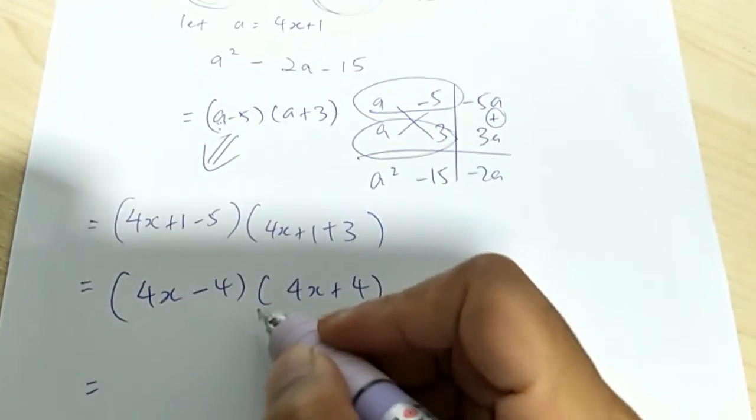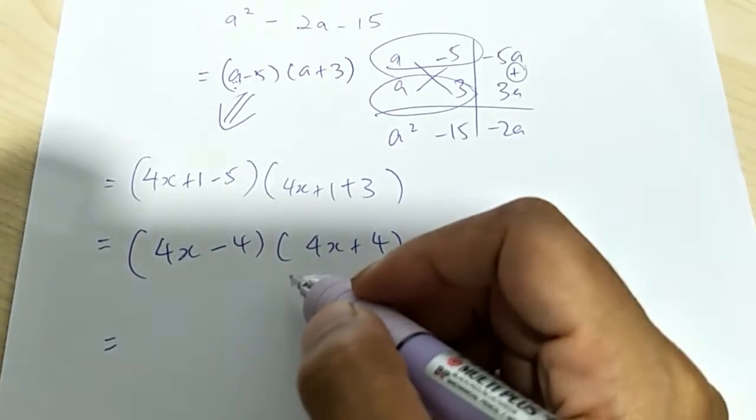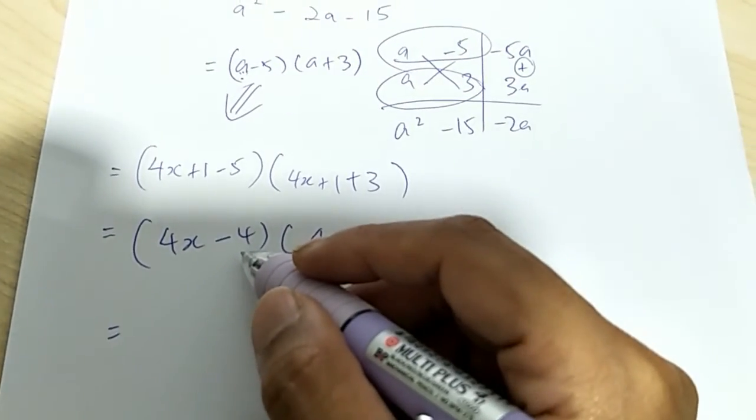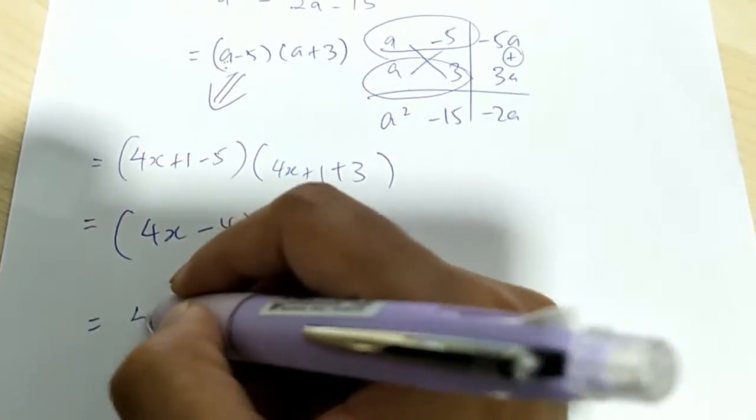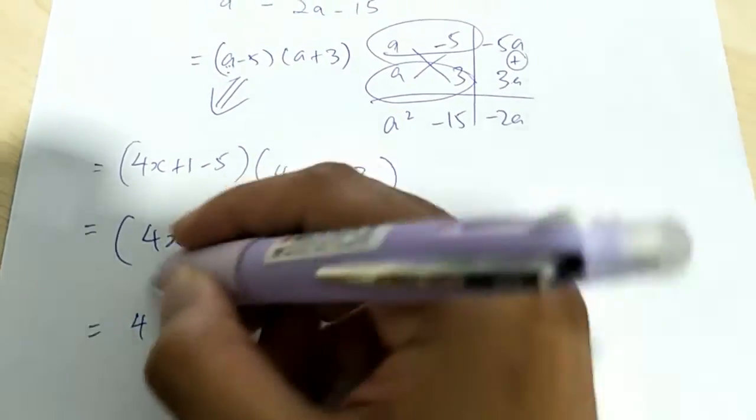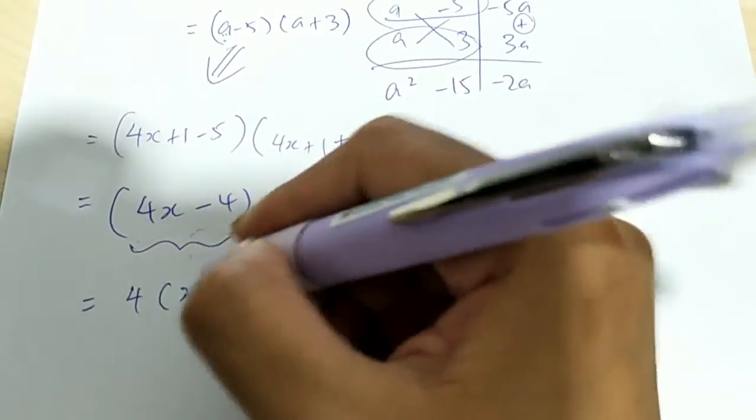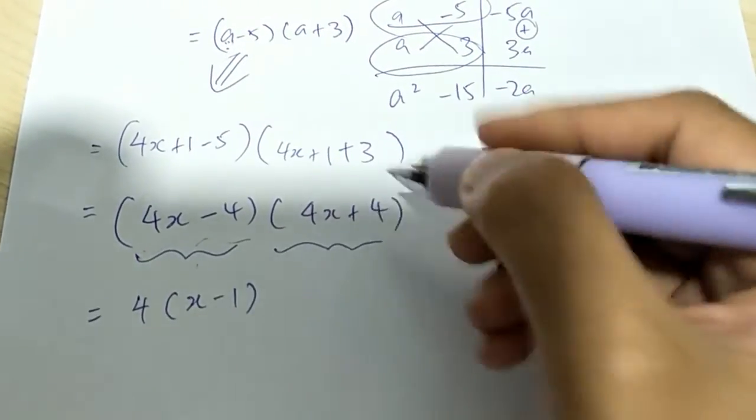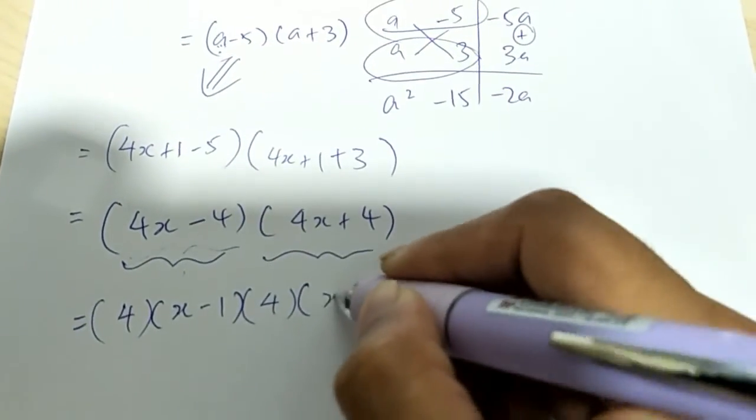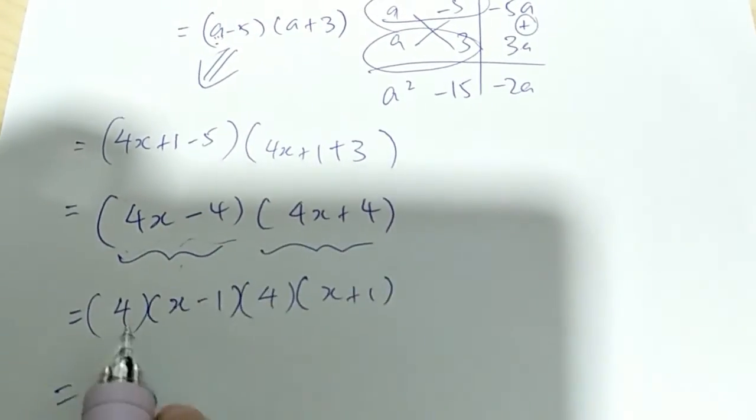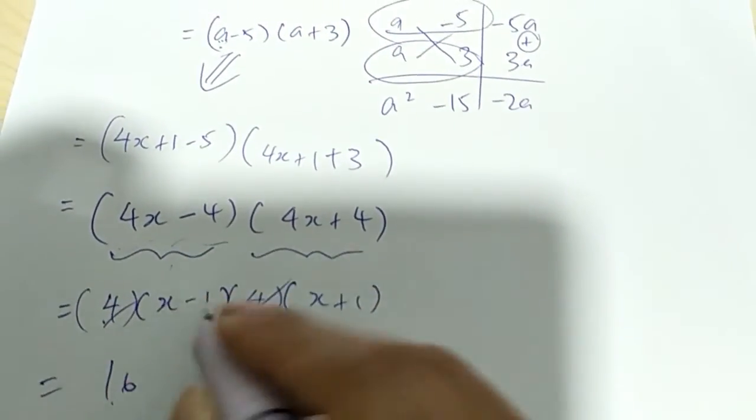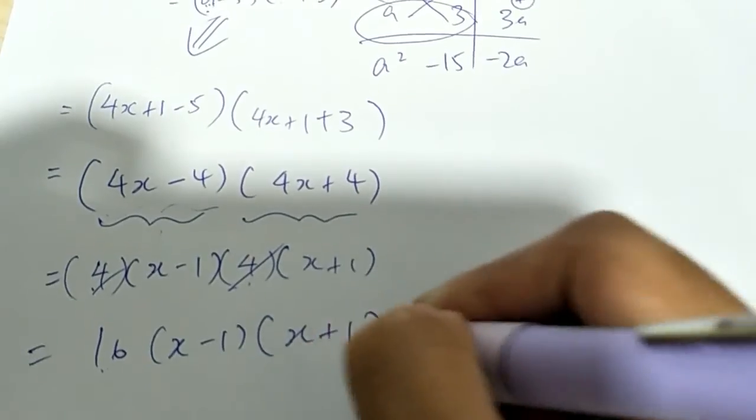So this one, can you factorize some more? Actually, yeah, you can. So if you were to take out common factors here, it is actually 4 bracket x minus 1. Take out this common factor here. So this will give you this. This one, I realize that there's some common factors. I take out 4 again. So you get x plus 1. So this is 4 times 4 is 16. This is, it gives you 16, x minus 1, and x plus 1.